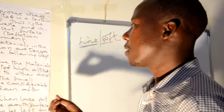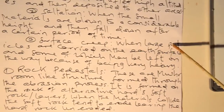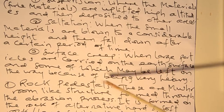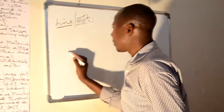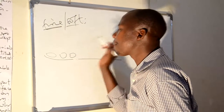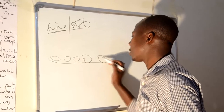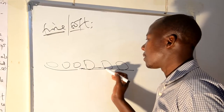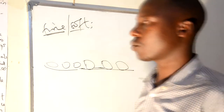Saltation involves small but relatively heavier particles. How about surface creep? Surface creep is when large particles are carried along the surface, and some of which may be left along the way because of being very heavy. Wherever the eroded material is too heavy to be blown by the wind, that process is called surface creep.